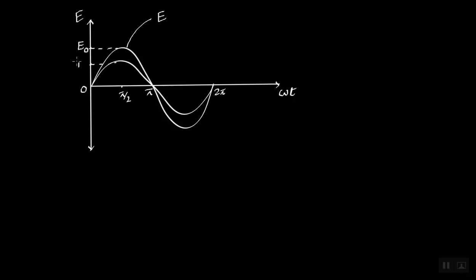So when we plot this graph for i0, we have to plot it like this. It's the same only, but the amplitude i0 will be smaller than that of e0. This part here is i0, and this graph is the graph for i.